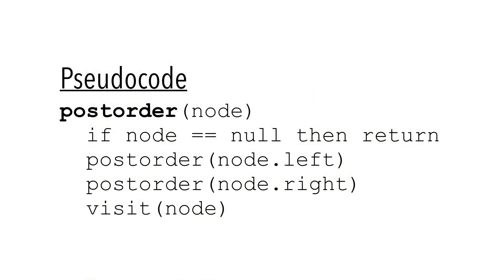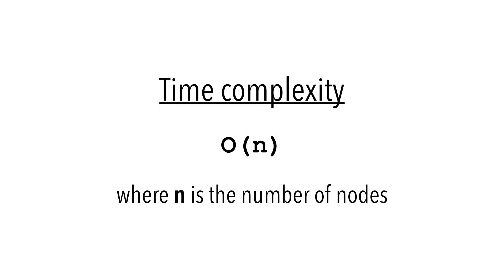In case you want to code this yourself, here's the pseudocode for post-order tree traversal. Like we've seen before, our time complexity is O(n) as we call visit on each node exactly once.